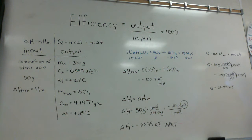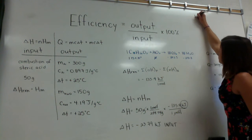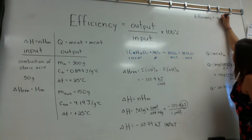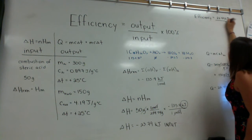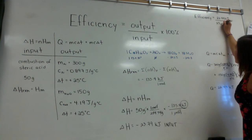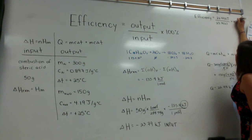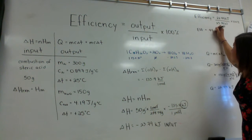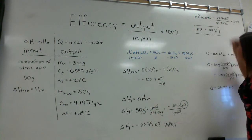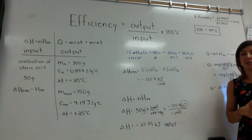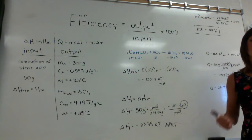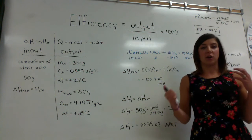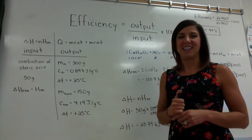Calculate the efficiency: output over input. We take 22.44 kilojoules out and we put in 23.79 kilojoules, multiply by 100%, and get an efficiency of 94%. Now, 94% efficiency is extremely unlikely in everyday life — it means basically all the heat is going directly into the pot and the water. In real life it's going to be more like 1 or 2%, so make sure you're thinking about the realisticness of the chemical reaction.